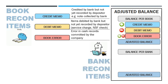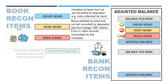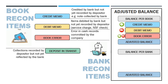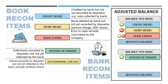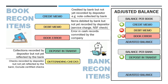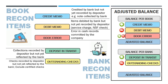The bank reconciling items are as follows. First are deposits in transit, which are cash collections debited by the company but not yet credited by the bank — these are added to the cash balance per bank. Next are outstanding checks, which are checks credited by the company but not yet credited by the bank. Outstanding checks should exclude certified checks, which have been charged by the bank already. Outstanding checks are deducted in our bank reconciliation.